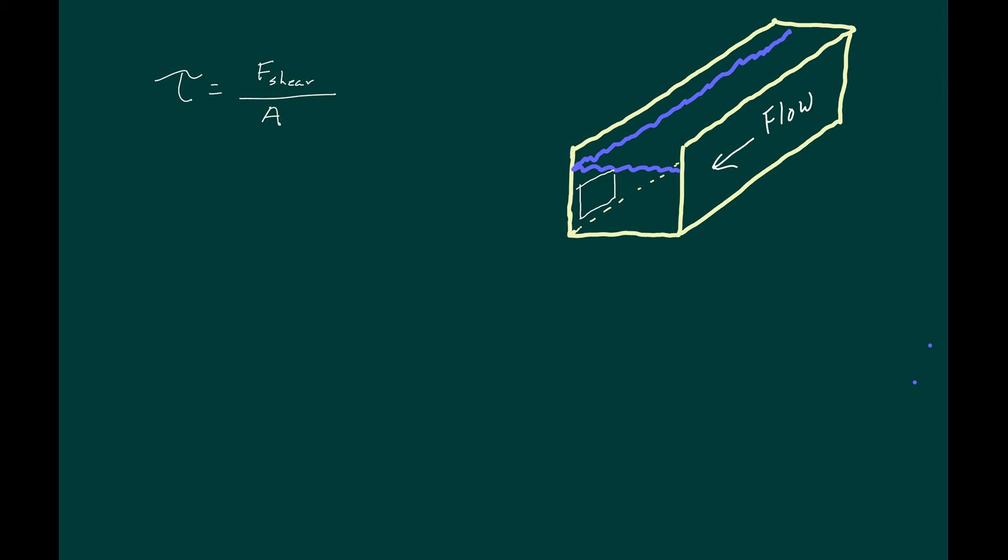Tau acts parallel to this small plane that I've drawn on the side of this channel so tau would affect against the flow. It's the amount of force parallel to that unit of area against the flow. The area could be on the bottom or the side or anywhere on the surface of the channel bed.